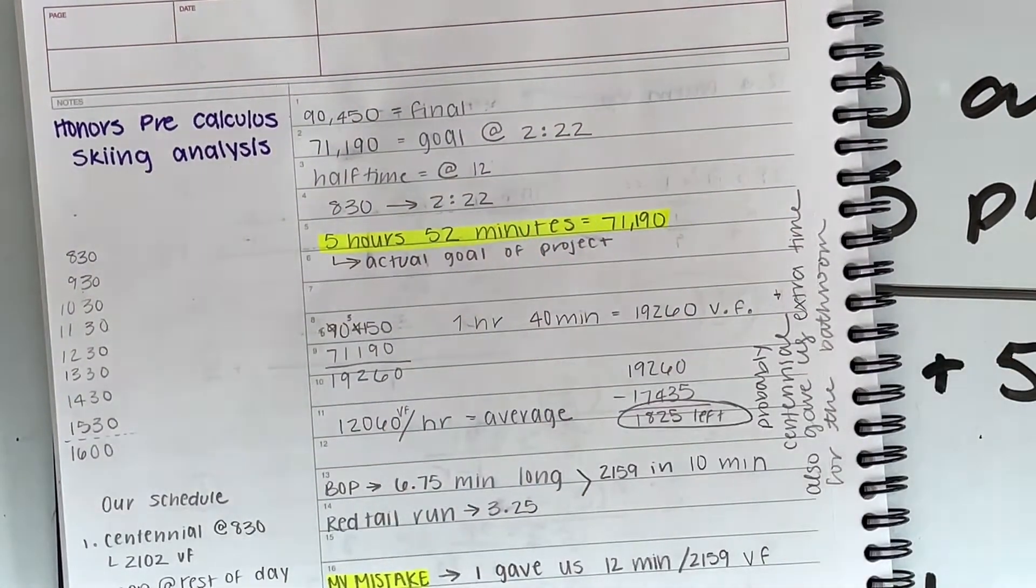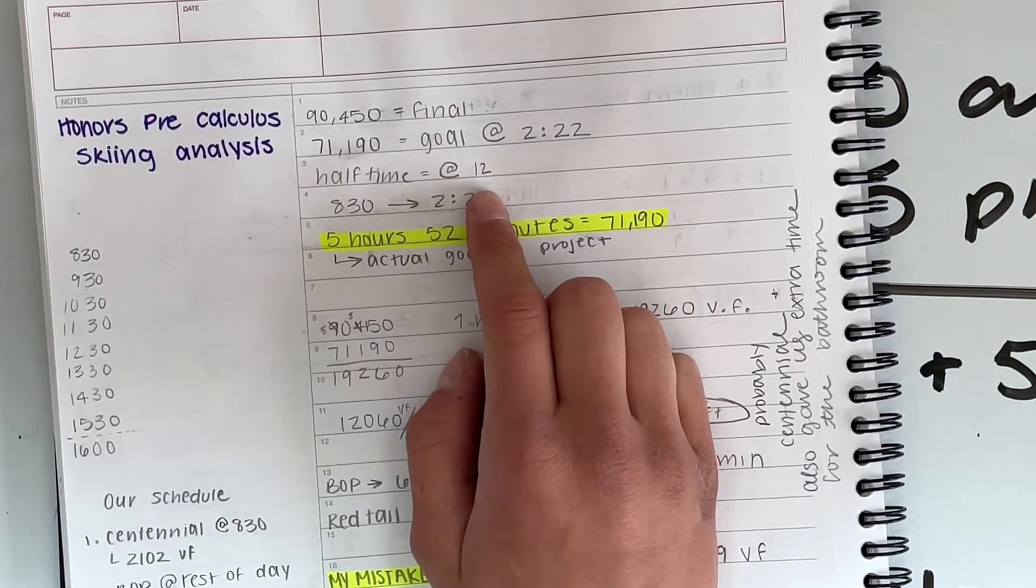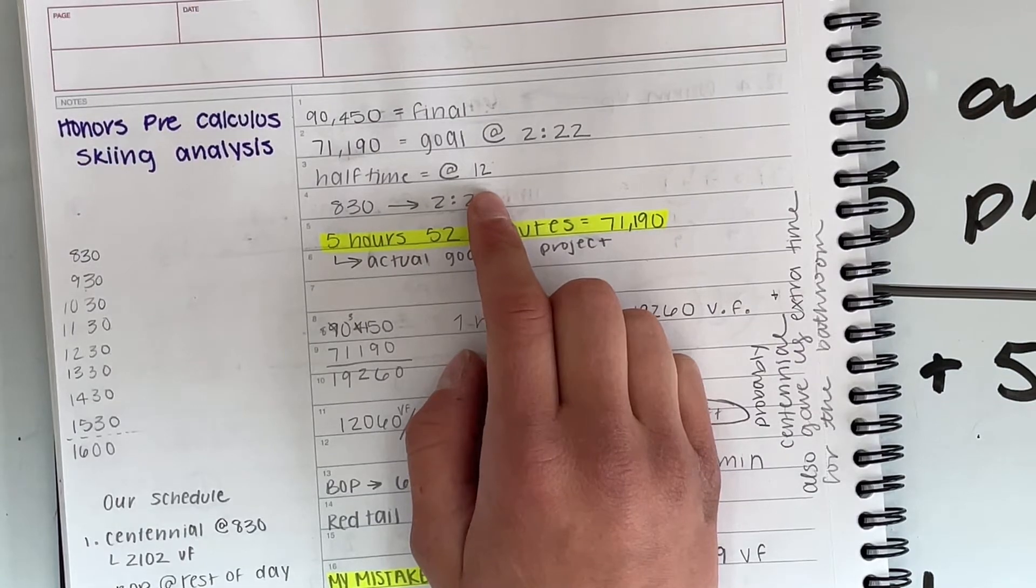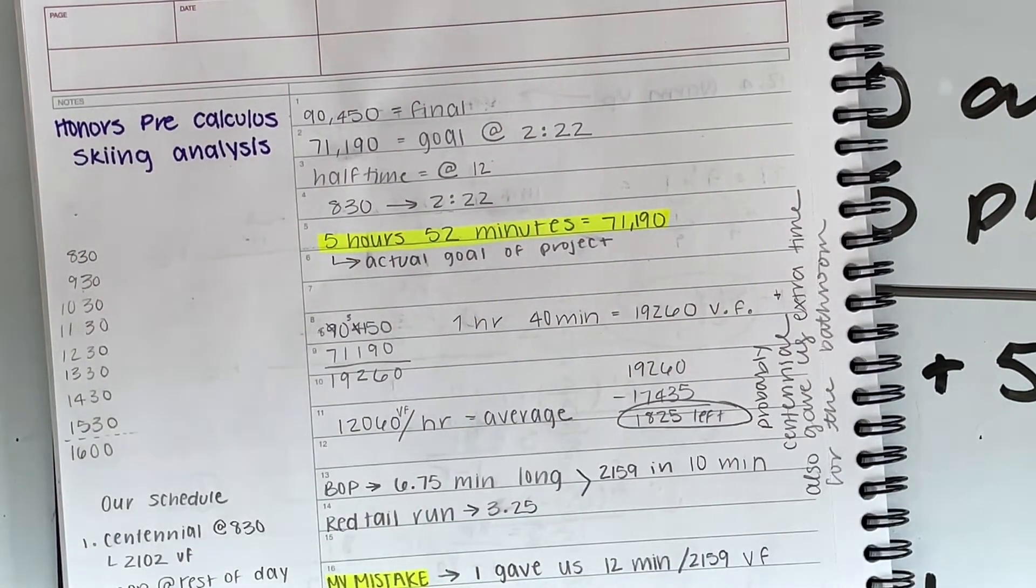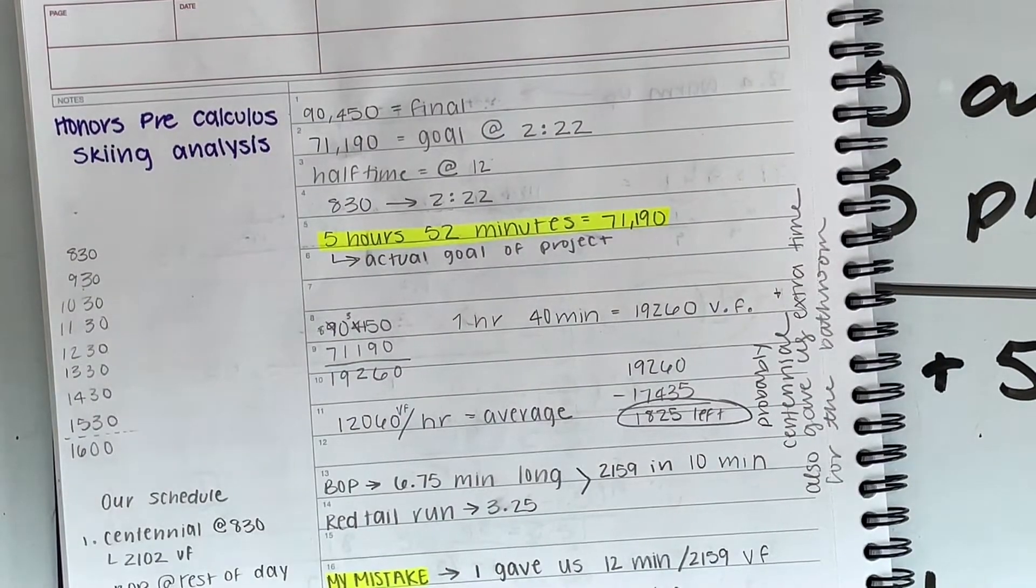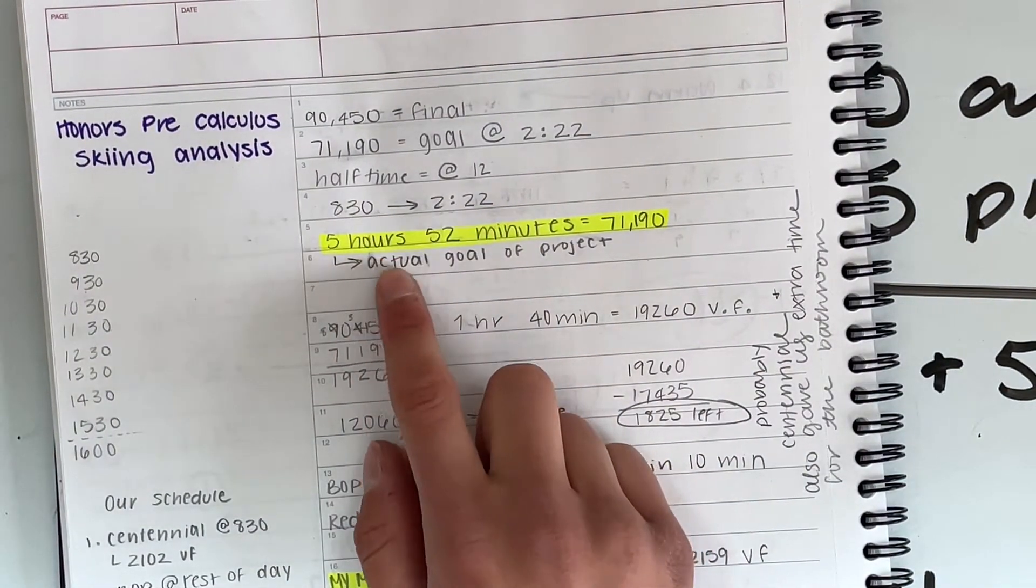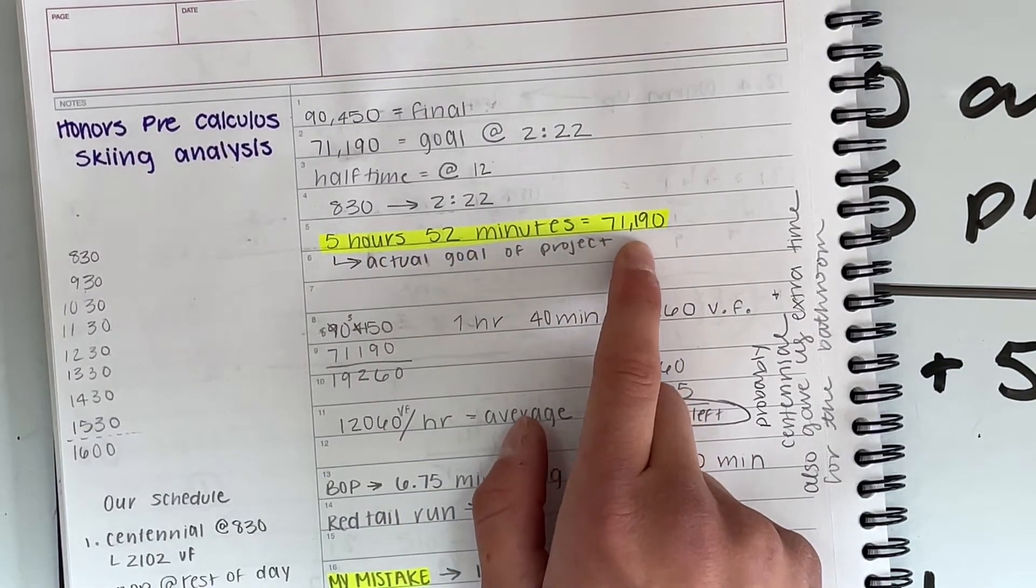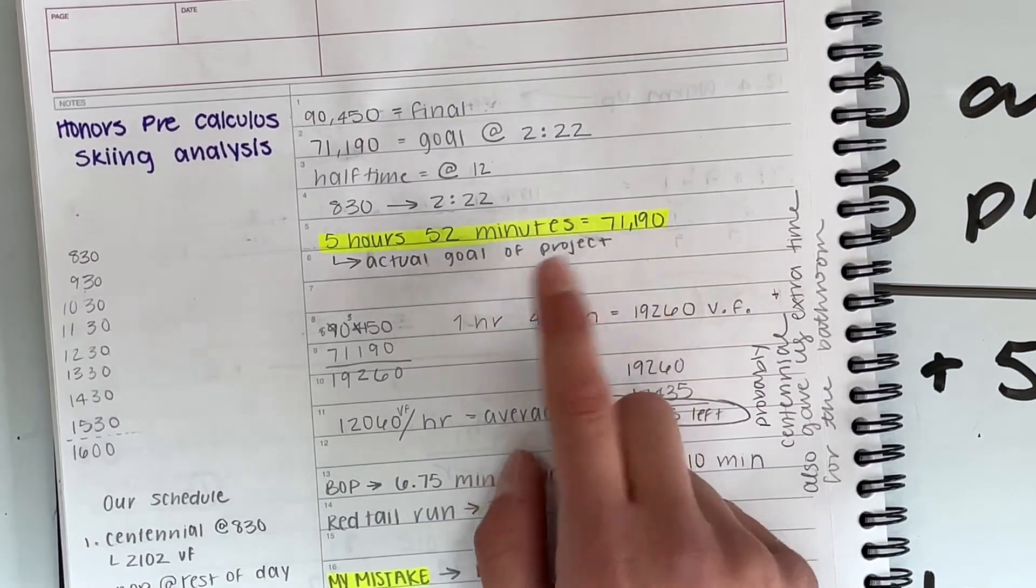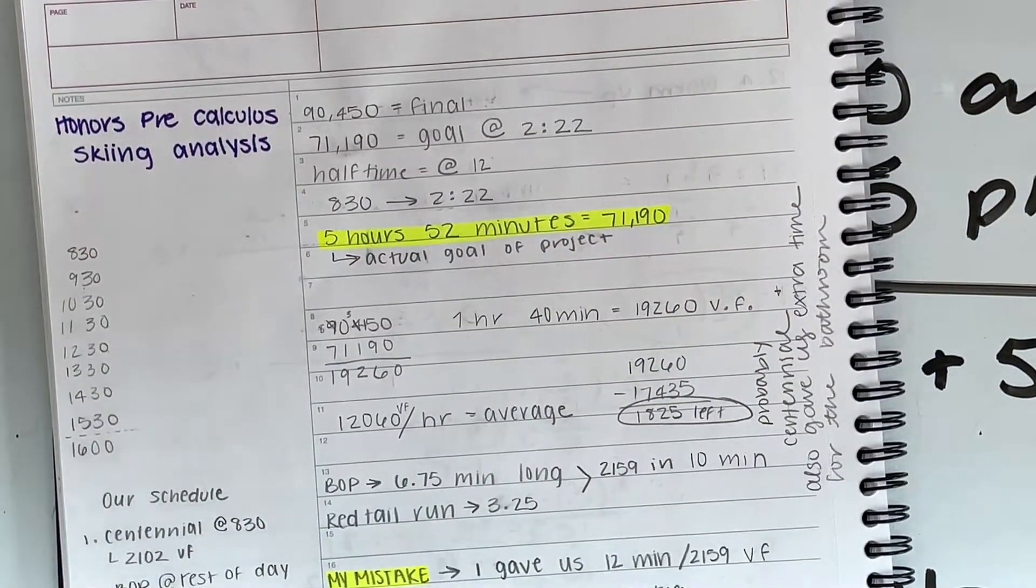And so that's basically when we knew, okay, if we're at 35,000 at 12, then we were going to be able to hit 70,000 by four o'clock. But we actually hit that way earlier. So 8:30 to 2:22 is five hours and 52 minutes to get 71,190 vertical feet. That's the actual goal for the project. So we could have said, okay, we're totally good, but no, we went for 90.